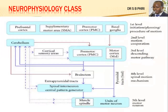Since this is part of the motor system, you also need to understand the levels of the motor system. The motor system has about five major levels. The first level is involved in initiation, planning, and procedure of motion. The structures involved at the first level include the prefrontal cortex, the primary motor area, the pre-motor cortex, and the basal ganglia. These structures are involved in initiation, planning, and procedure of movement.